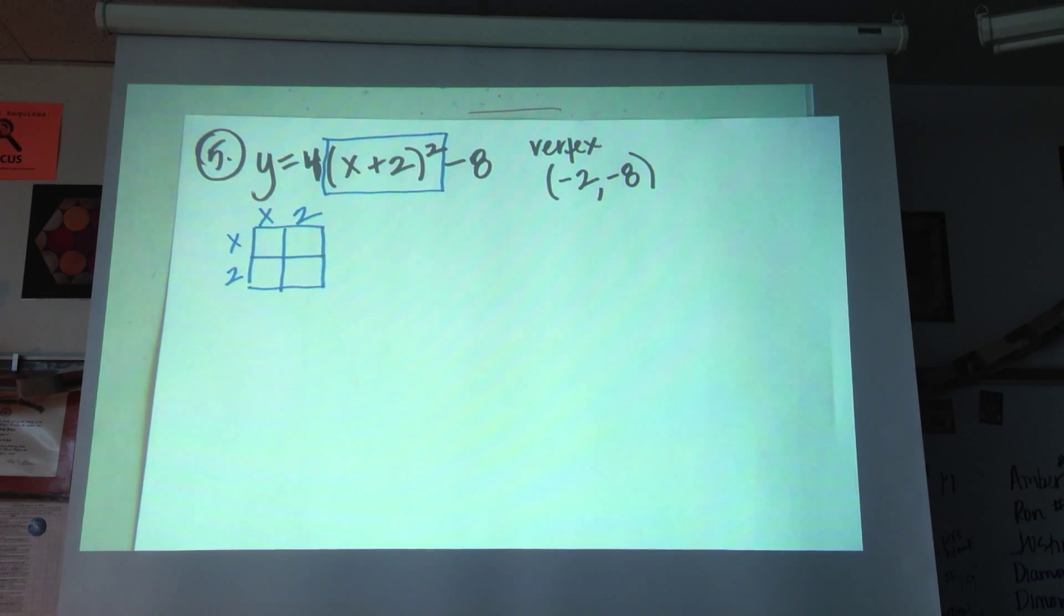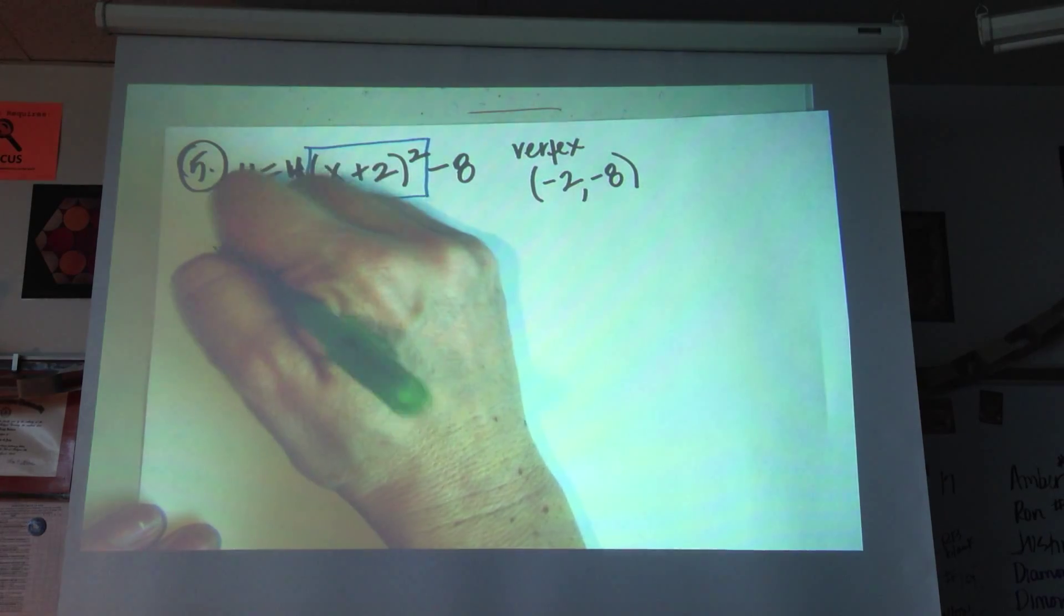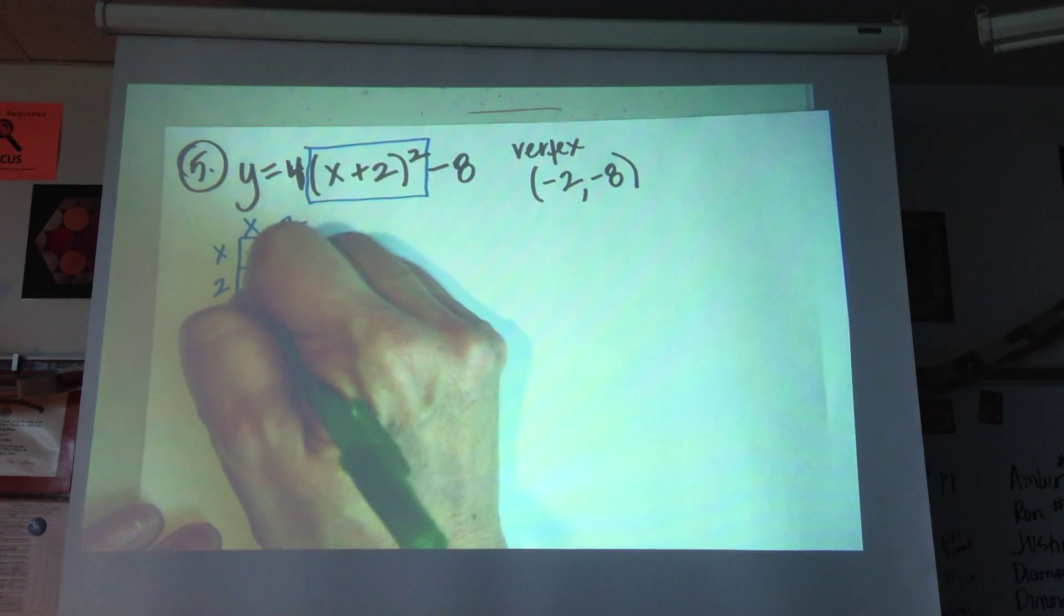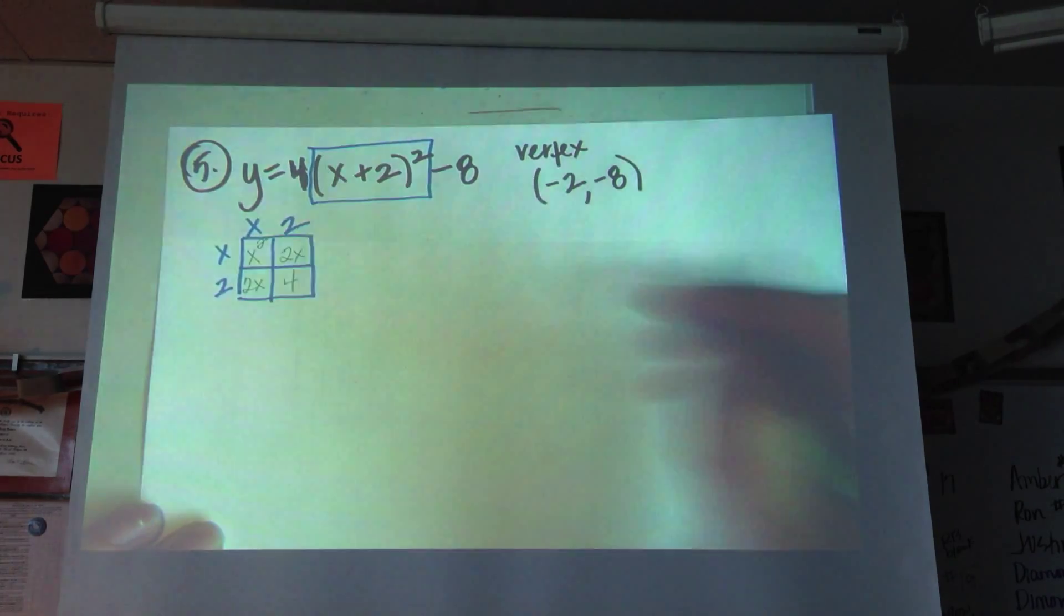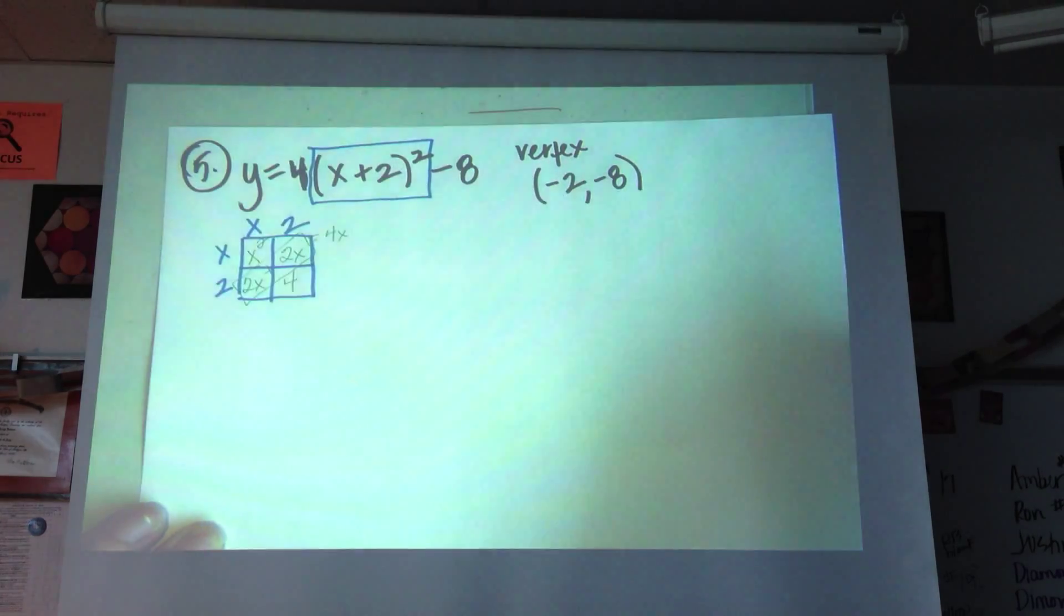So now that I'm going to just staple your corrections to the front, I'm going to multiply this together and get x squared, 2x, 2x, and 4.